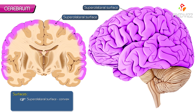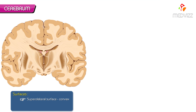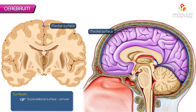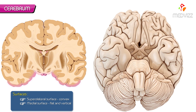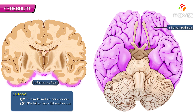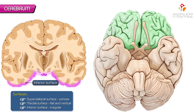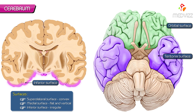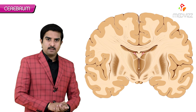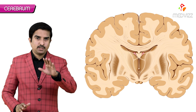The medial surface is flat and completely vertical. The inferior surface is irregular and is divided into an anterior part called the orbital surface and a posterior part called the tentorial surface. These are the three surfaces of the cerebrum.